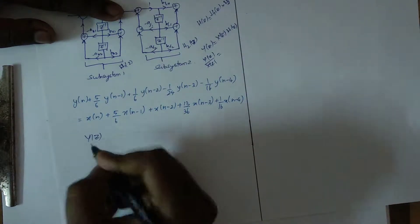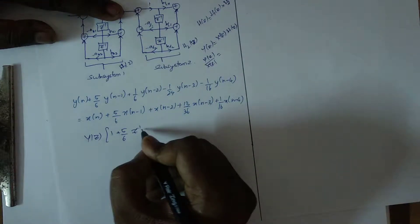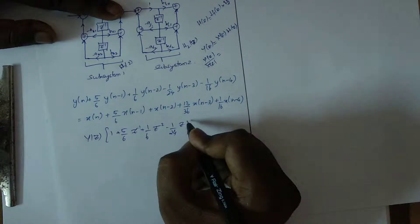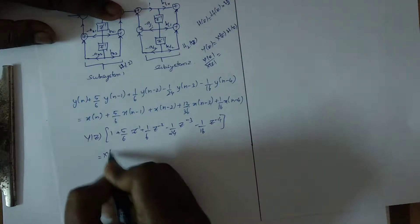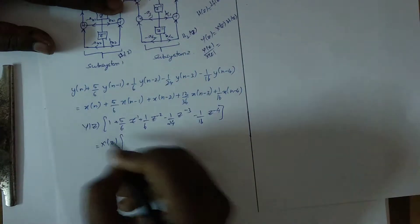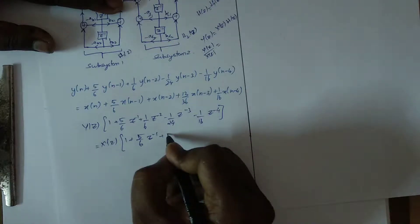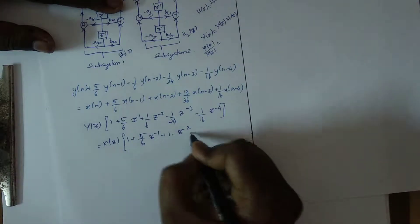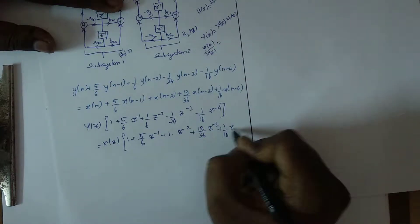I will take this one directly. Y(z) will be: 1 + (5/6)z⁻¹ + (1/6)z⁻² − (1/24)z⁻³ − (1/16)z⁻⁴, equal to X(z) into: 1 + (5/6)z⁻¹ + 1·z⁻² + (13/36)z⁻³ + (1/16)z⁻⁴.